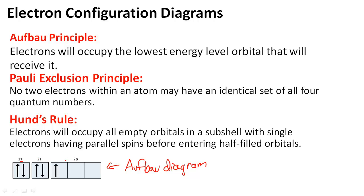There are definitely rules and principles that we have to follow so that we can draw accurate electron configuration diagrams. The first one is Aufbau principle, which says electrons will occupy the lowest energy level orbital that will receive it. So if the 1s orbital is open, then it will fill up the 1s before it goes to 2s, then to 2p.